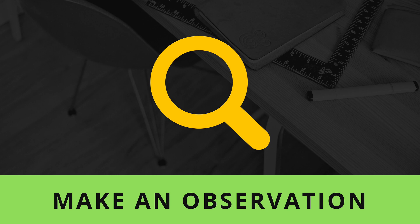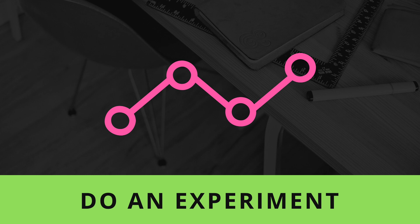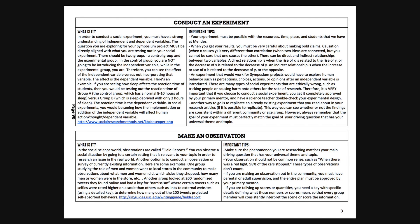If you plan on making observations, make sure your observations are consistent by using a key or a system that creates objective observations. If you plan on doing an experiment, please ask for guidance from a science teacher who can help you get the materials and design the experiment. Be sure to read pages 74 through 83 to learn more about conducting an experiment or making an observation.